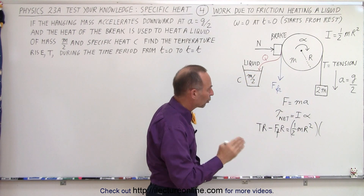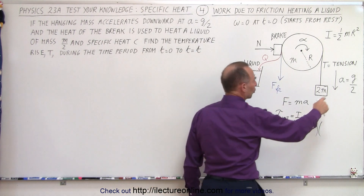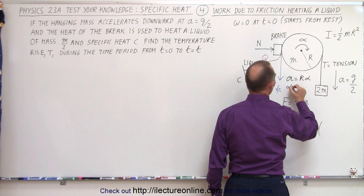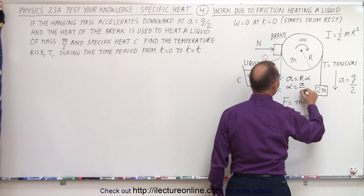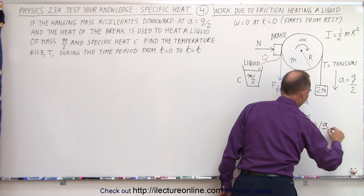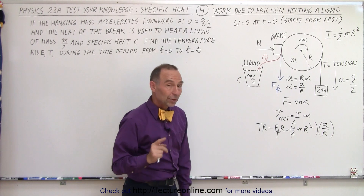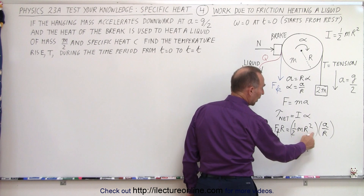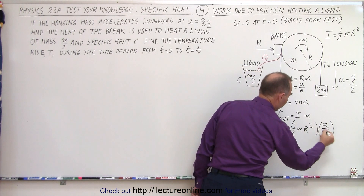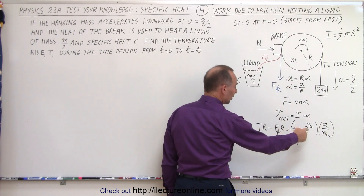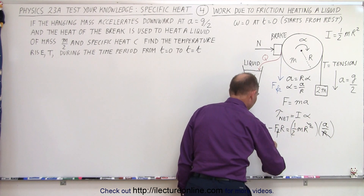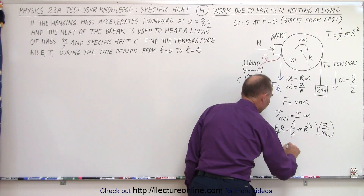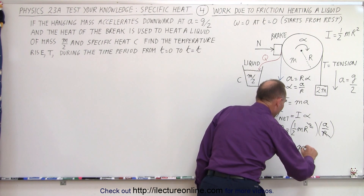Now we have to find an equivalence of the angular acceleration in terms of the linear acceleration. We know that a is equal to r times alpha, so alpha is equal to a divided by r. Right away, we notice that on the left side we can factor out an r, and on the right side we have r squared but half divided by r. So the r's cancel on both sides of the equation, giving us: tension minus friction force equals one half ma.